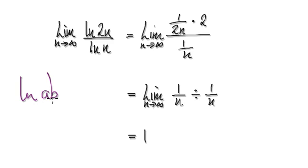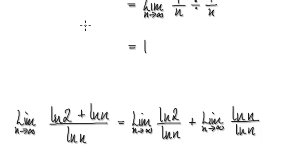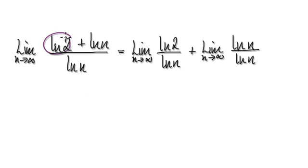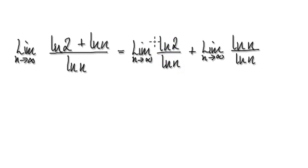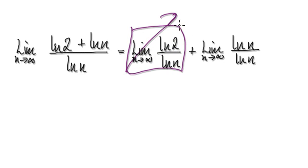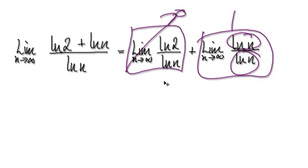The other way of evaluating this is to break it up using the log rule: natural log of A times B equals natural log of A plus natural log of B. So break ln(2n) into two parts. Take the limit of each part separately. The first part is a constant divided by something that keeps getting bigger and bigger, so its limit is 0. The second part gives exactly the same over exactly the same, so that limit is 1. Overall, the limit is 1.